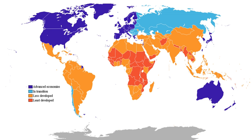The term industrialized country may be somewhat ambiguous, as industrialization is an ongoing process that is hard to define. The first industrialized country was the United Kingdom, followed by Belgium. Later it spread further to Germany, United States, France and other Western European countries. According to some economists such as Jeffrey Sachs, however, the current divide between the developed and developing world is largely a phenomenon of the 20th century.